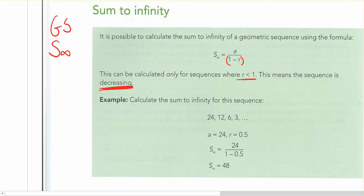So if we look at the example 24, 12, 6, 3, it's getting lower and smaller and smaller each time. We can calculate a sum to infinity on this particular problem. Our first thing to do would be determine a, we can see that's 24.